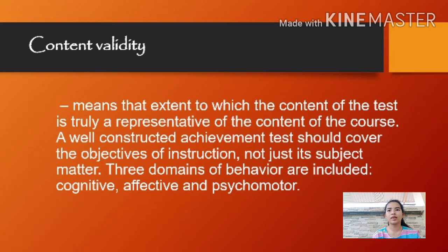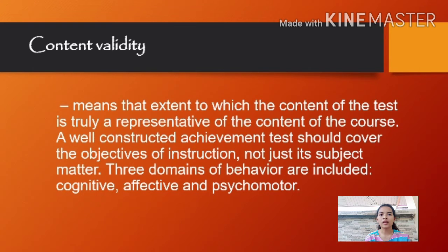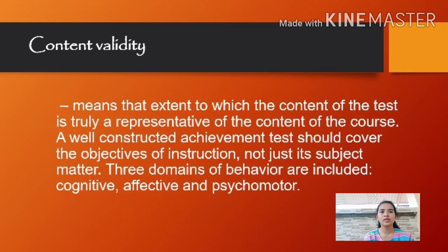The first type of validity is content validity. It means the extent to which the content of the test is truly a representative of the content of the course. A well-constructed achievement test should cover the objectives of instructions, not just its subject matter. Three domains of behavior are included: cognitive, affective, and psychomotor. Content validity shows whether all the aspects of the test or measure are covered. For example, a language test designed to measure writing, reading, listening, and speaking skills indicates that the test has high content validity.